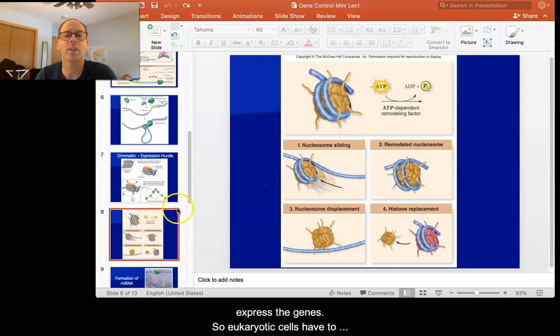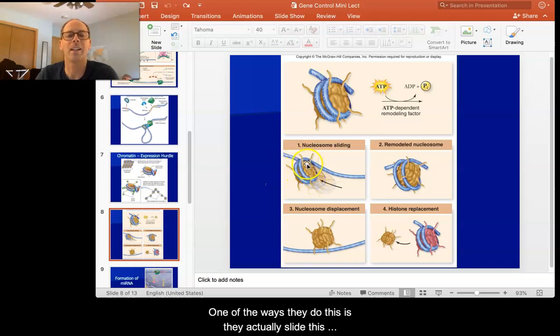So eukaryotic cells have to deal with this and they do this in several different ways. One of the ways they do this is they actually slide this particular protein down the DNA. So imagine I had a string wrapped around like a hockey puck. If I slid the loops of that string down, I would actually move the string. So if my histone was right here, I'd slide it down and then I would expose that part of the DNA that had the promoter in it.